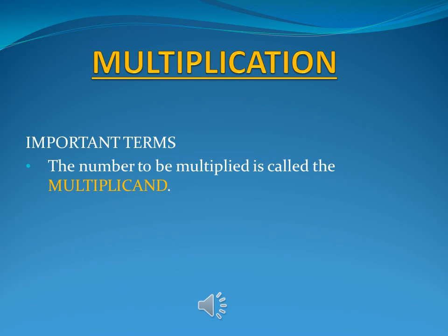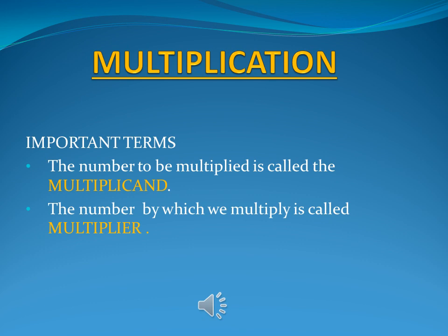The number to be multiplied is called multiplicand. The number by which we multiply is called the multiplier. And the result of the multiplication is known as product.